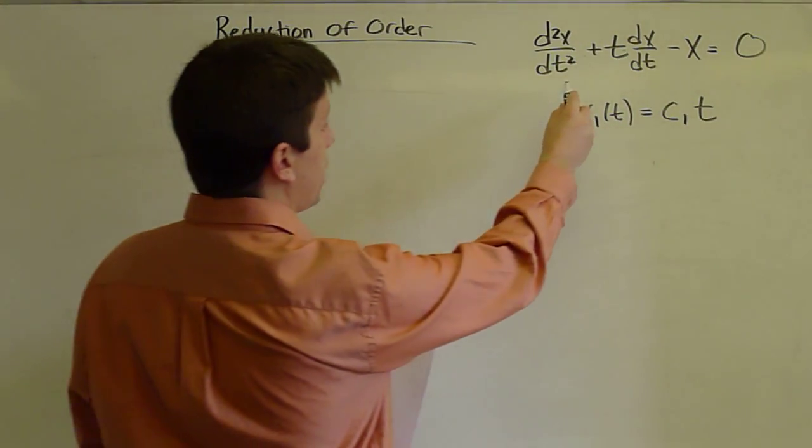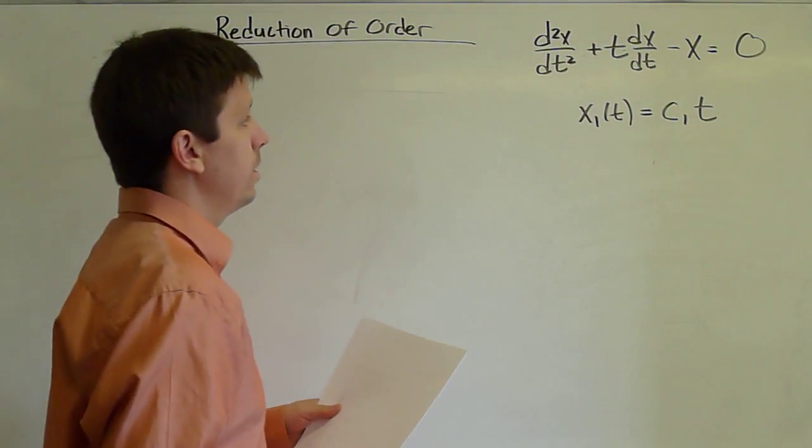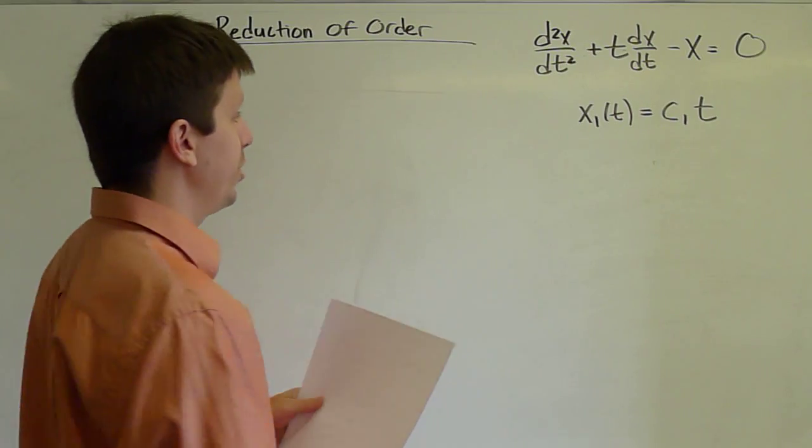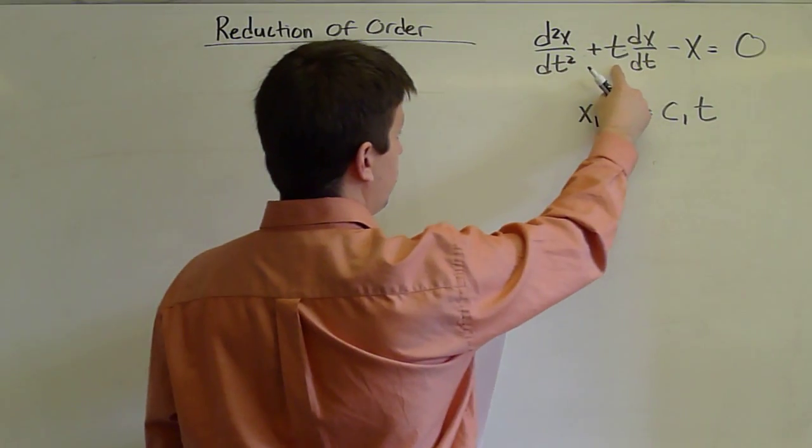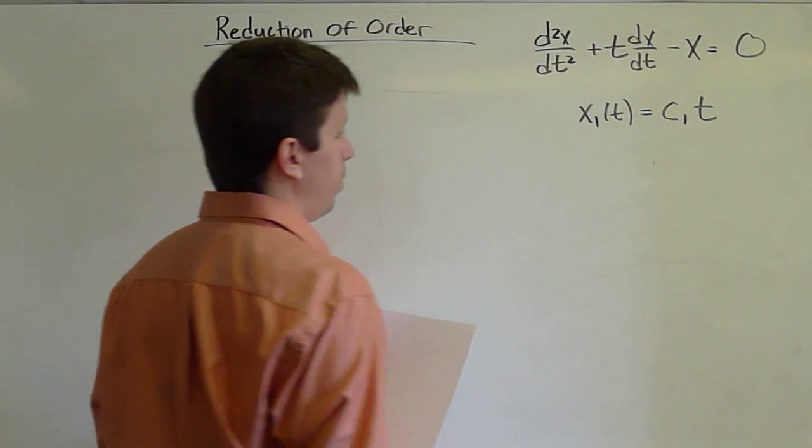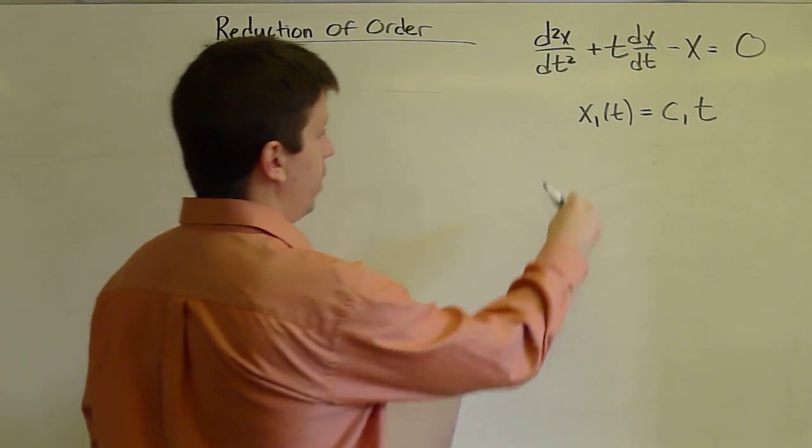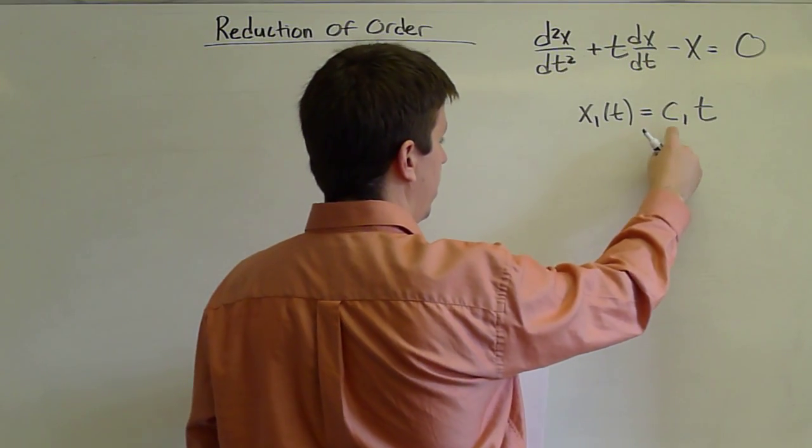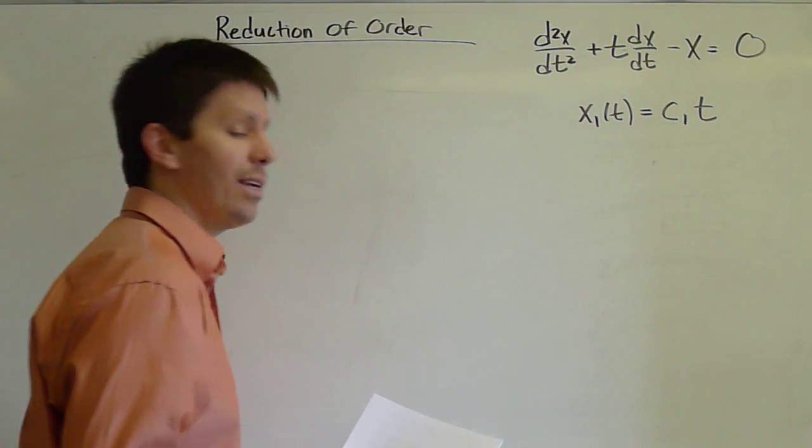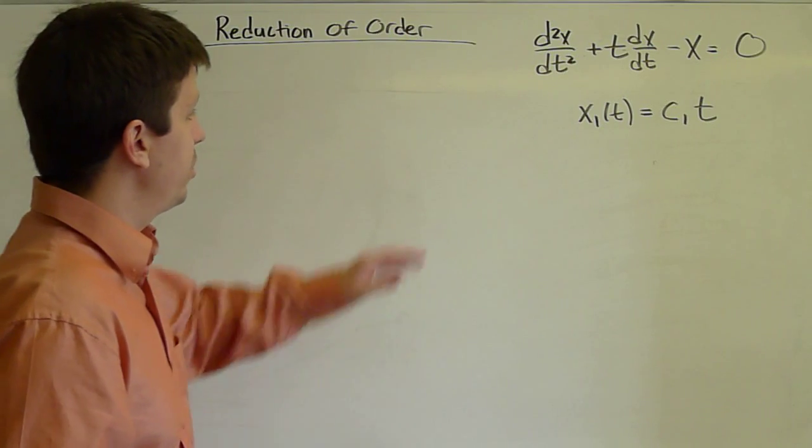We have a second order homogeneous ordinary differential equation with a t multiplying the first derivative and a negative one multiplying the zeroth derivative. And we're given that one of the solutions is an unknown constant times t. This is very easy to verify that it is a solution.